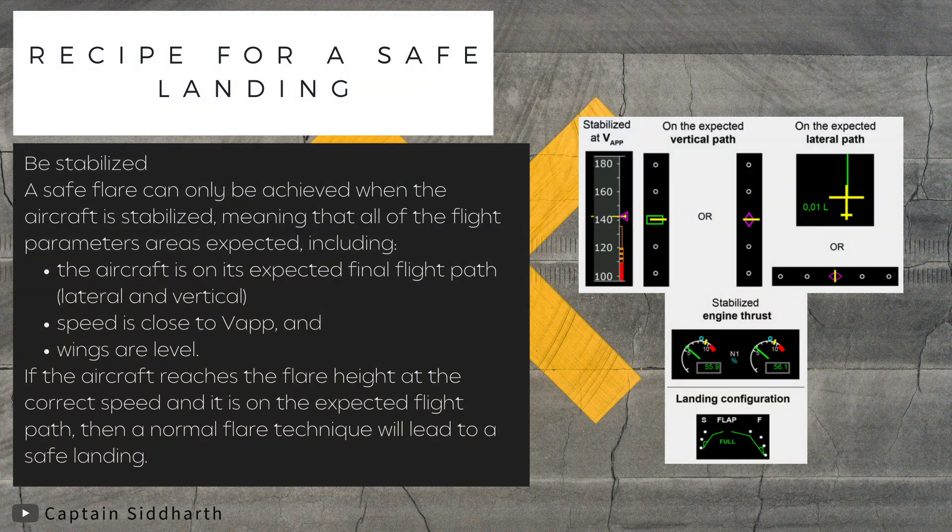Recipe for a safe landing: Be stabilized. A safe flare can only be achieved when the aircraft is stabilized, meaning that all of the flight parameters are as expected, including the aircraft being on its expected final flight path, speed close to V-approach, and wings level. If the aircraft reaches the flare height at the correct speed and is on the expected flight path, then a normal flare technique will lead to a safe landing.